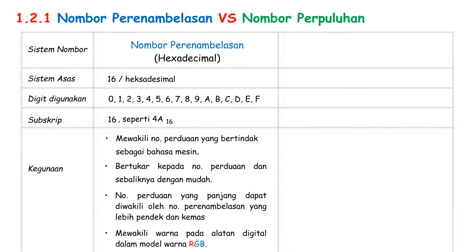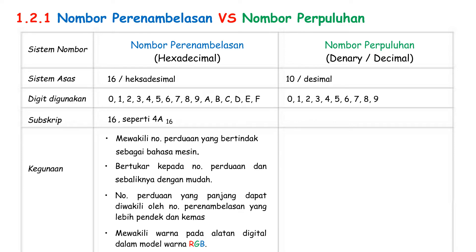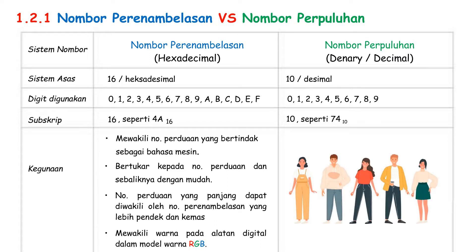For Nombor Perpuluhan, it is System Asas 10, which uses digit 0 to 9. The subscript of Nombor Perpuluhan is 10. For example, Nombor Perpuluhan 74 is written as 74, and at the right bottom, you need to write down 10 to indicate that this is a Nombor Perpuluhan. Humans use Nombor Perpuluhan widely in their daily life.